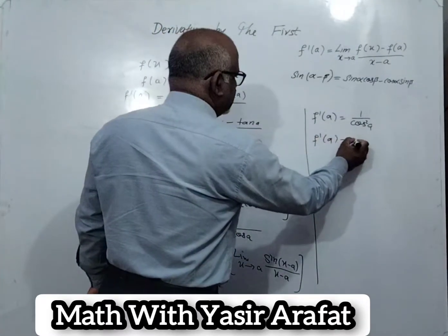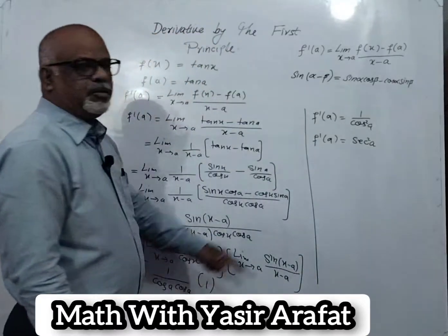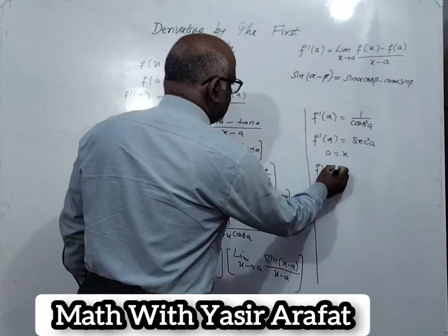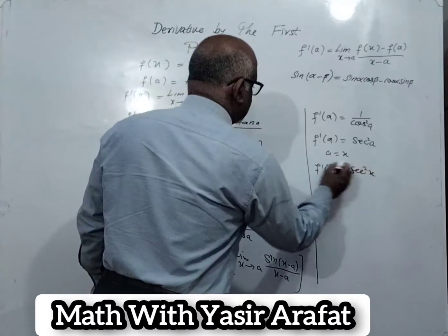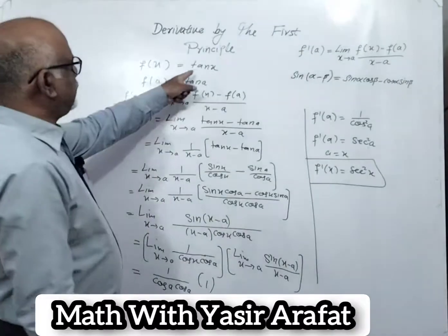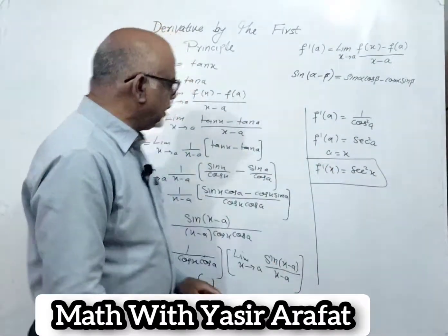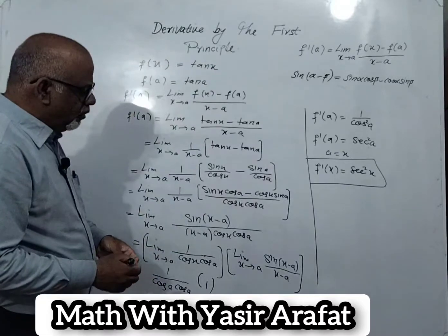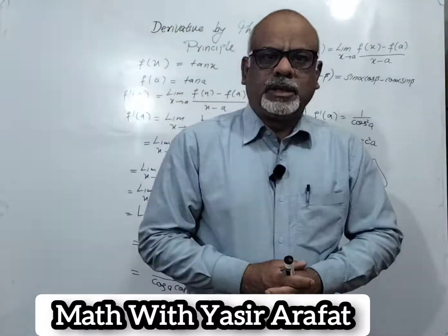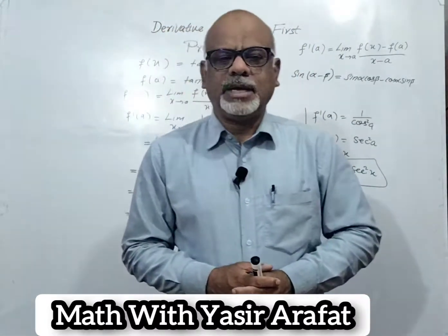1 over cos means sec, so 1 over cos squared a means sec squared a. Putting the value of a equal to x, f prime x equals sec squared x. This is the derivative of tangent x by using the first principle. So the derivative of tan x equals sec squared x. Dear students, thank you so much — if you like this video, please share it and subscribe to my channel.